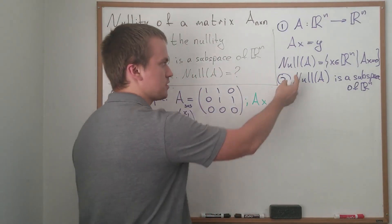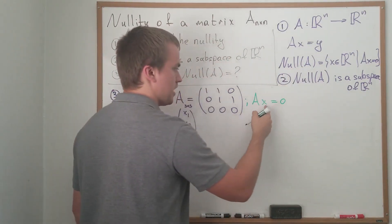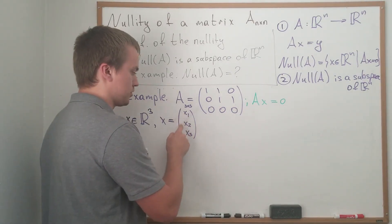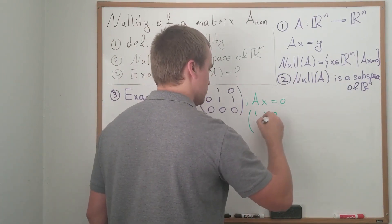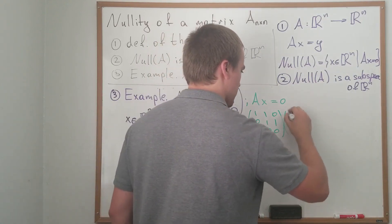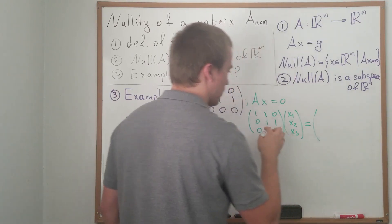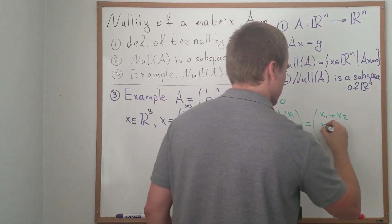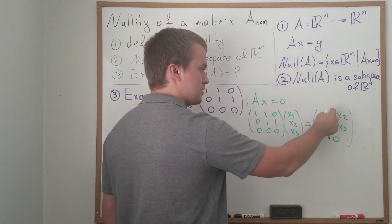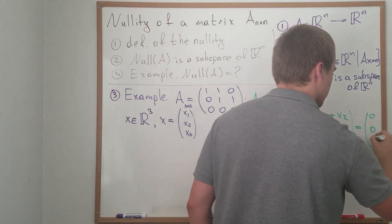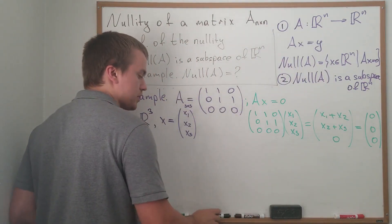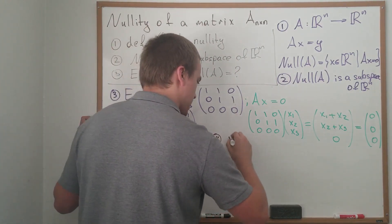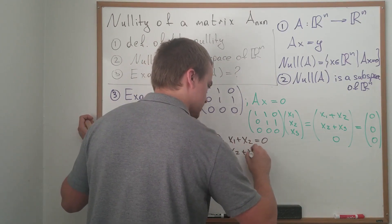We want to find all possible values of x₁, x₂, and x₃. Computing A times X gives the vector (x₁+x₂, x₂+x₃, 0), and setting this equal to the zero vector (0, 0, 0) gives us two equations: x₁ plus x₂ equals zero, and x₂ plus x₃ equals zero.